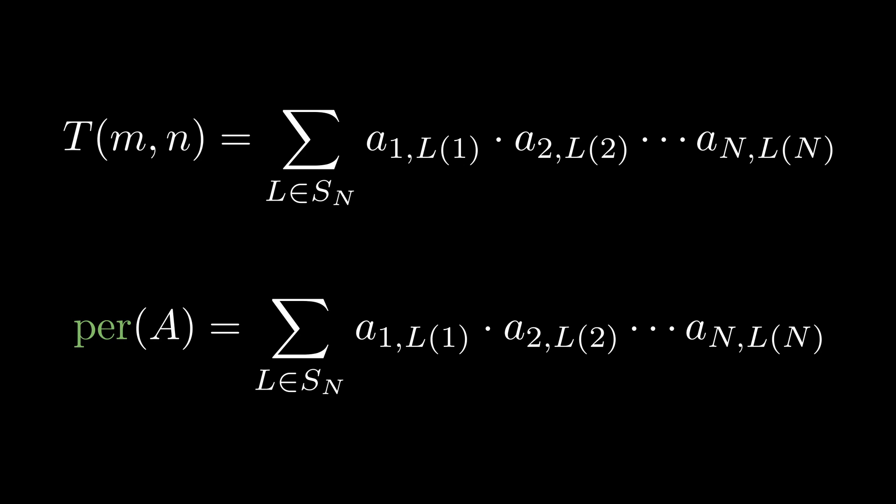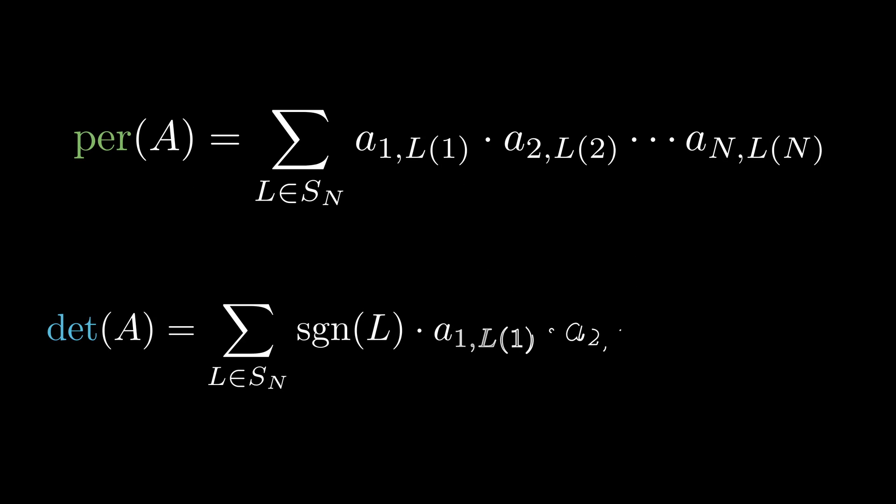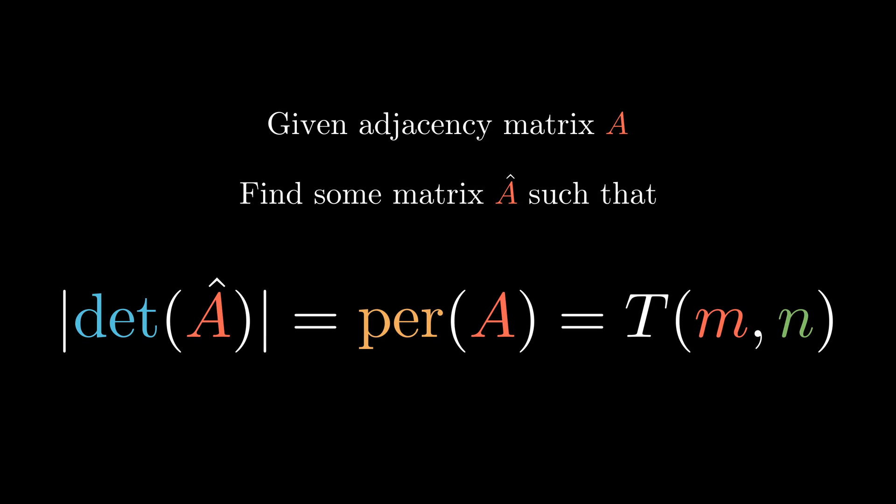We've simplified our question to this: given two numbers m and n, find the adjacency matrix A and calculate the permanent of A. The main issue is that computing the permanent of A is incredibly difficult — we are iterating through every single possible permutation, which takes exponential time. But notice that the formula for the permanent is very similar to that of the determinant of a matrix, and the determinant can be calculated in polynomial time, O(n³). So now we want to find some matrix A-hat for which the absolute value of the determinant of A-hat equals the permanent of A, making the value of our solution just the determinant of A-hat.